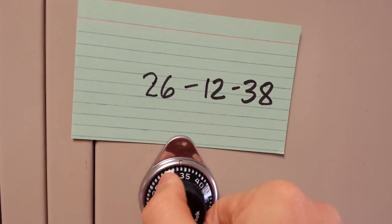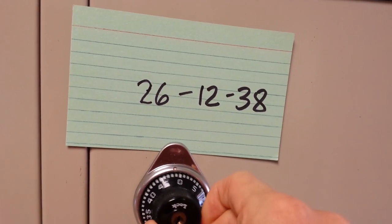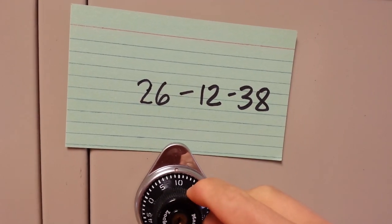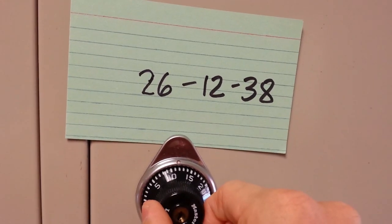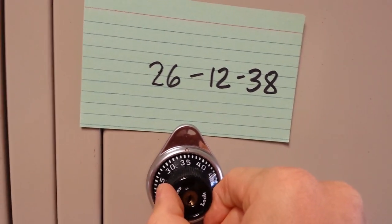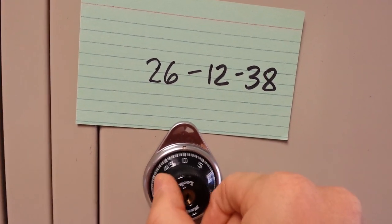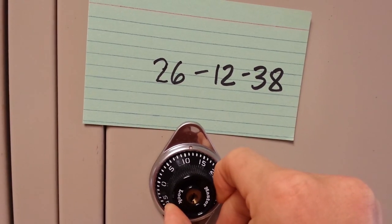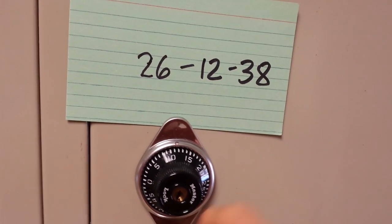I'm going to turn it to the left and I'm going to keep going, keep going. And then when I reach 12, the second number, I'm going to pass it. So the second number I pass one time and then I go back to it and then I stop at 12.